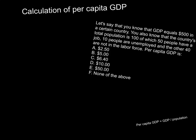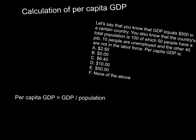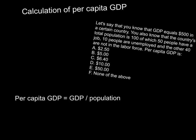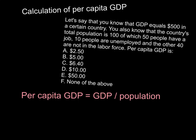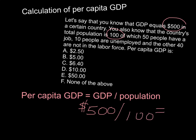So let's figure out the right answer to this question. First of all, we've got to realize the definition for per capita GDP. Per capita GDP is GDP divided by the total population. Let's see what the GDP is in the problem — it says it's $500, divided by the total population of 100, and that equals $5.